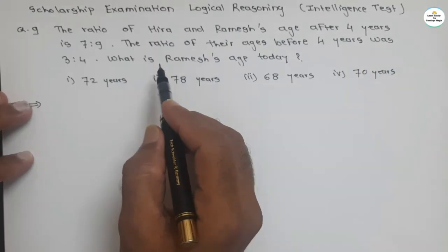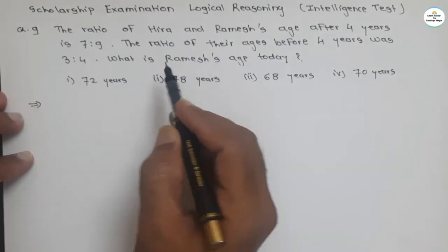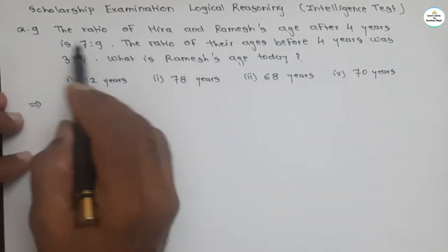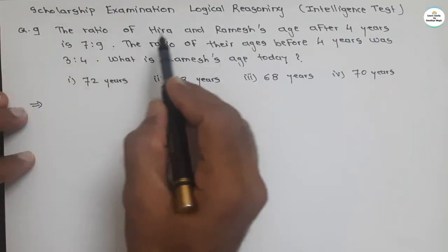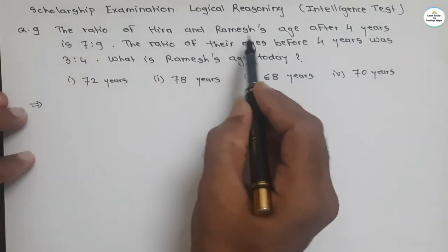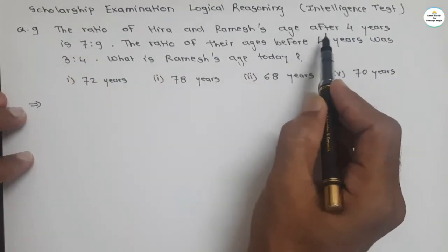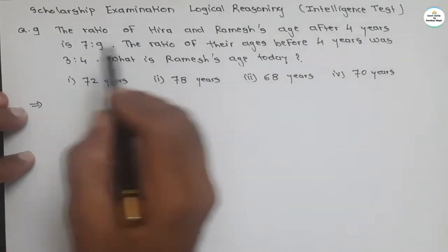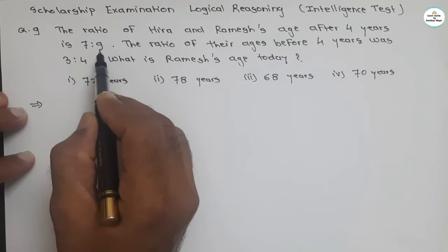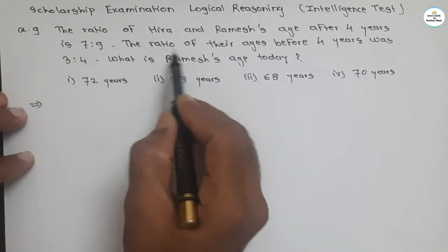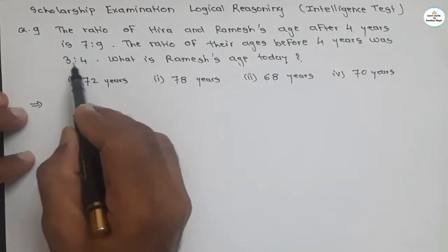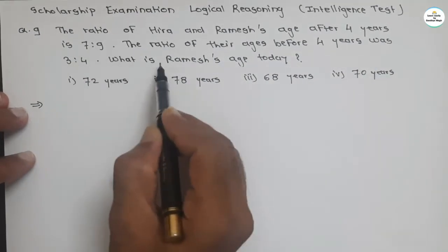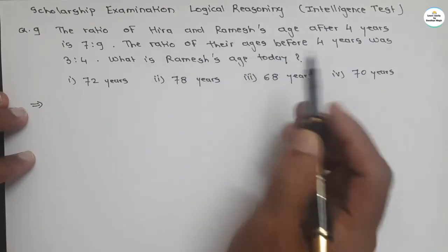In this video, we will see two questions. Let's see our first question: the ratio of Hera and Ramesh's age after 4 years is 7 to 9. The ratio of their ages before 4 years was 3 to 4. What is Ramesh's age today?